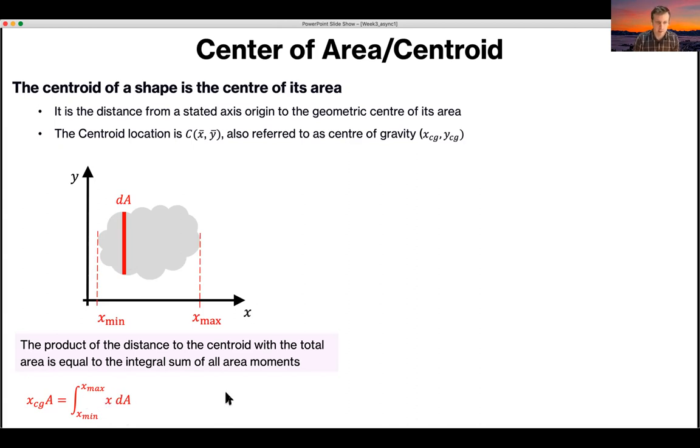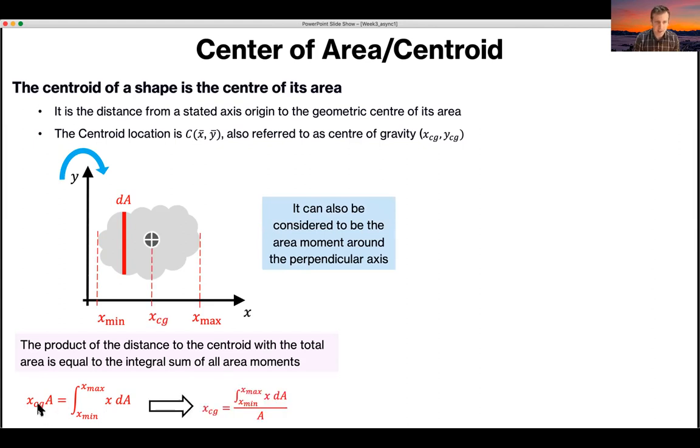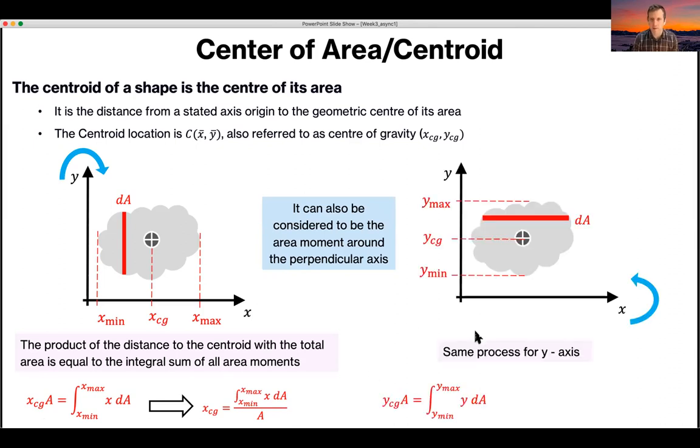And then if you solve that, you can solve for the moment CG, XCG. So you can consider it as a sum of individual moments around the perpendicular axis. And then if you want to get the actual XCG, you have to divide through by the area. Exactly the same thing for the y-direction, except this time it's a sum of moments around the x-axis, and you get the corresponding form.